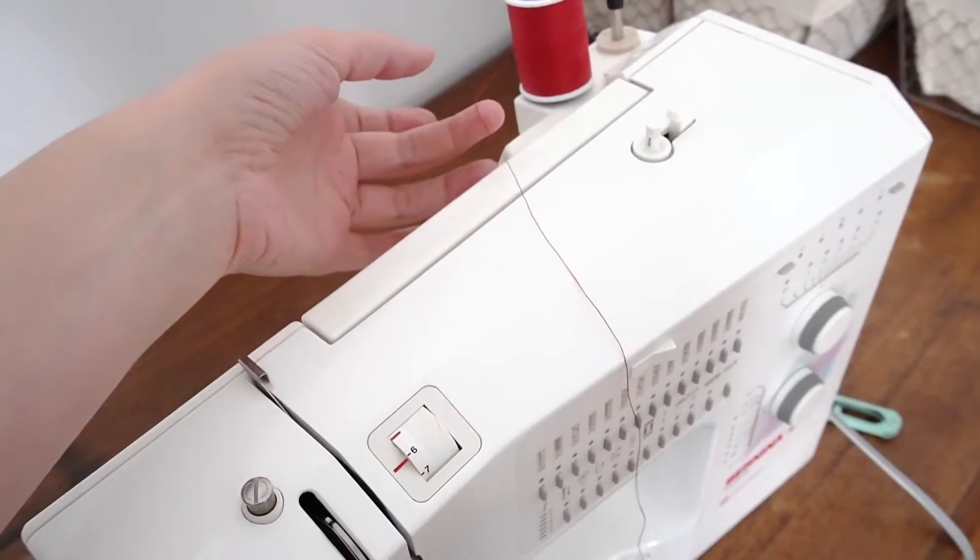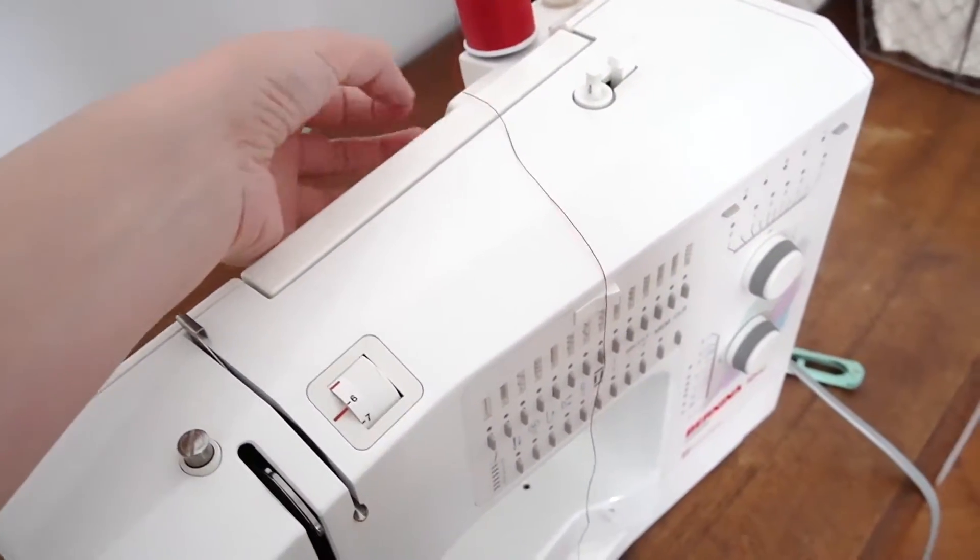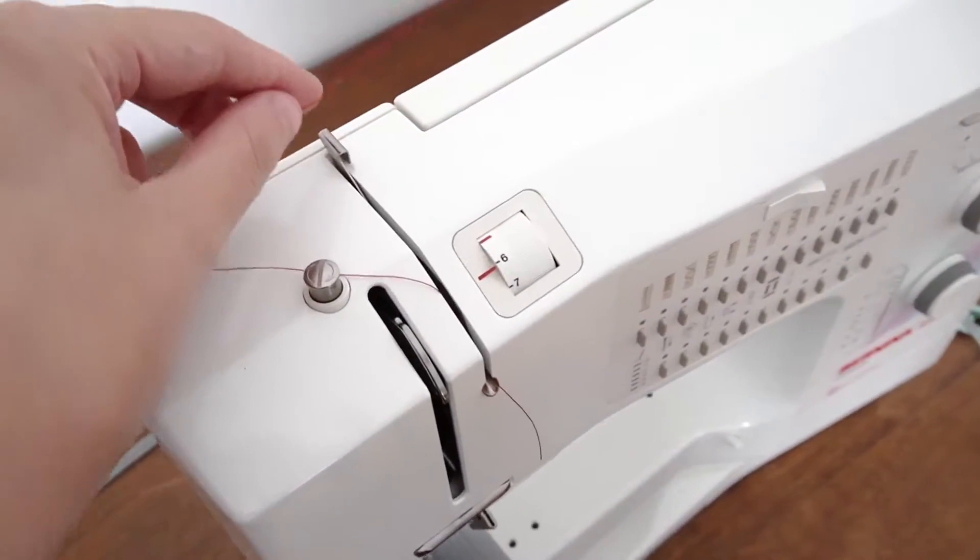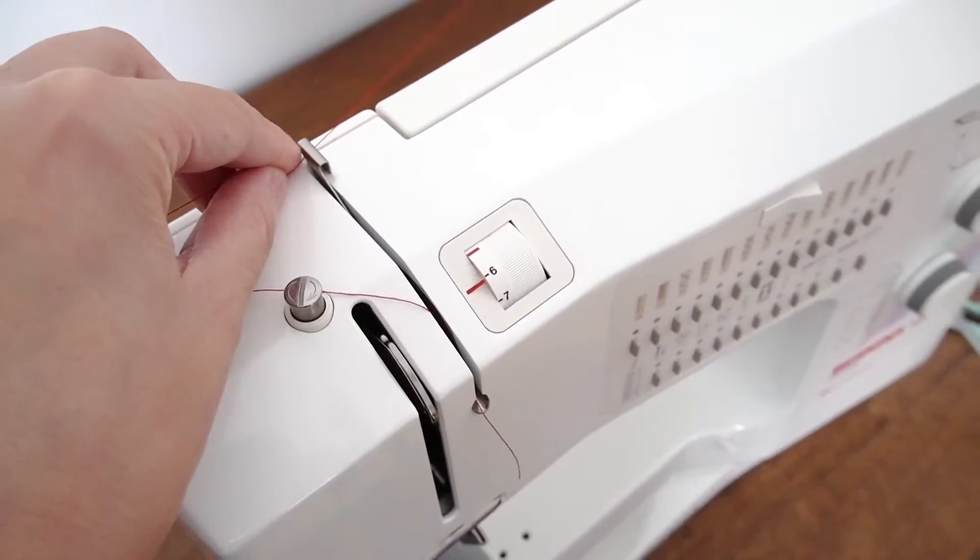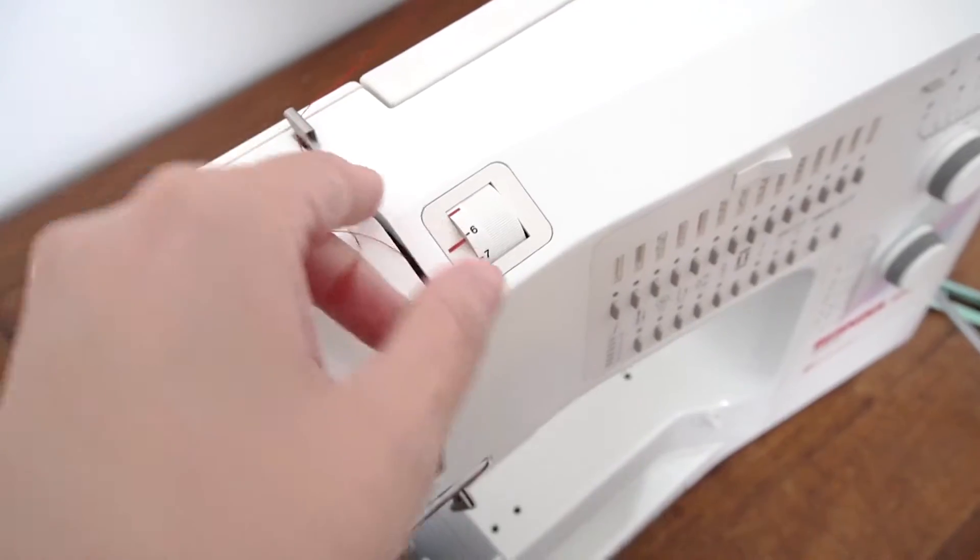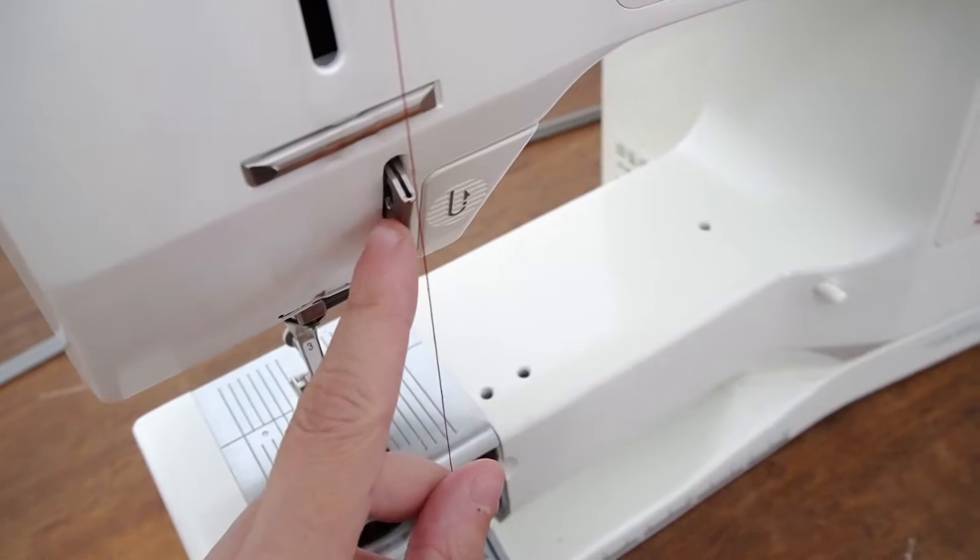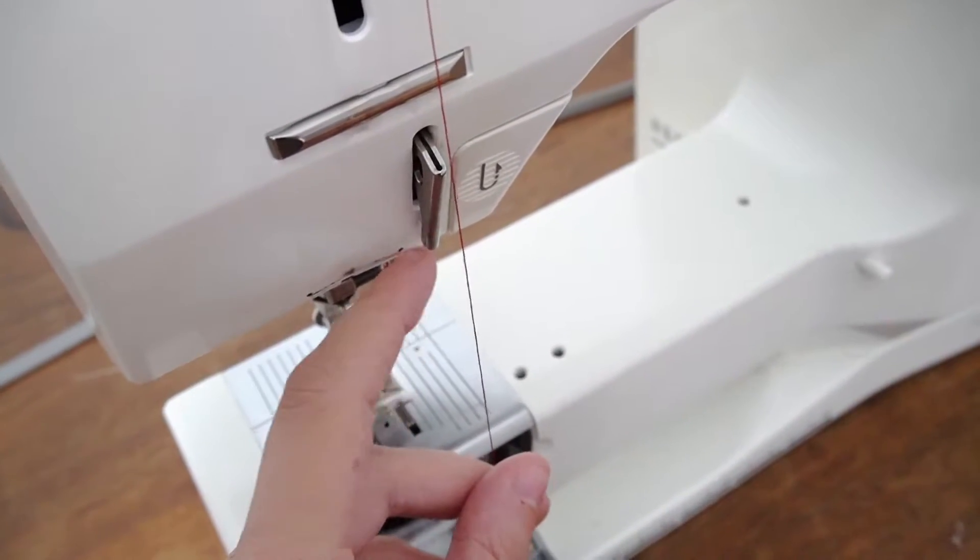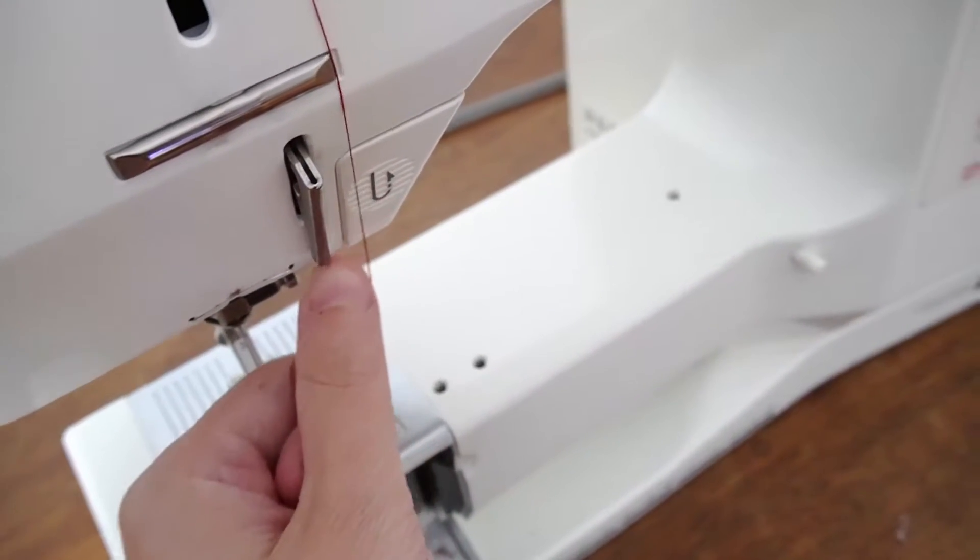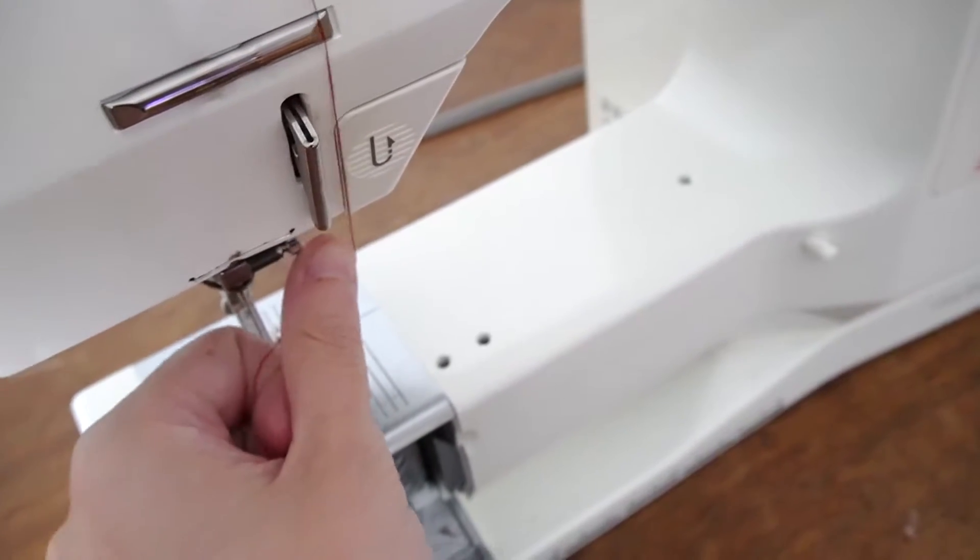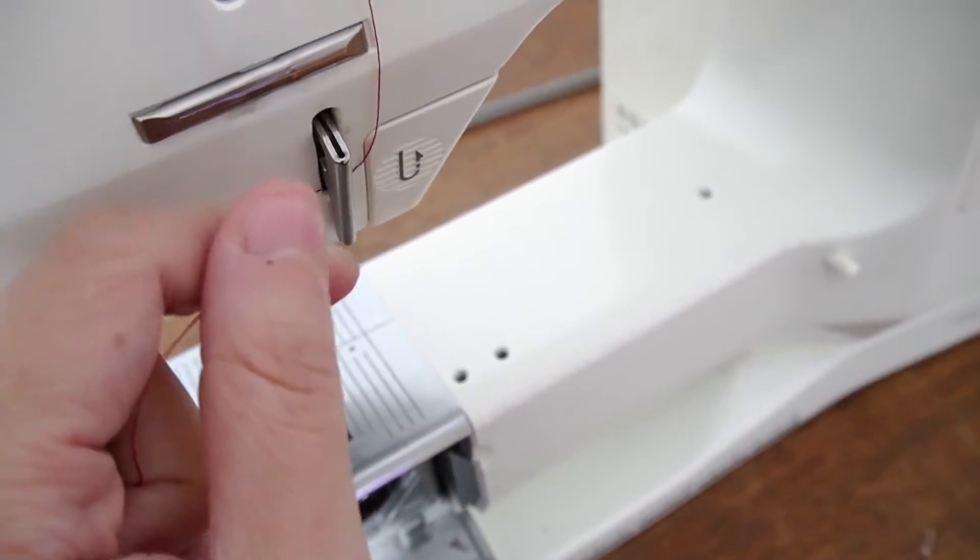So you're going to take the thread from the back of the spool, pull it over to this little lip edge right here, and front it to the left side of it. You're going to go down and then this right here is where it might be different from machine to machine. Mine is metal, sometimes they're plastic, but you're just going to run it from the right side, underneath it, up on the left side.